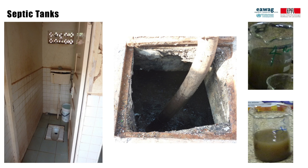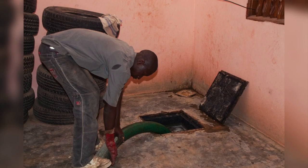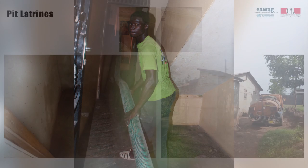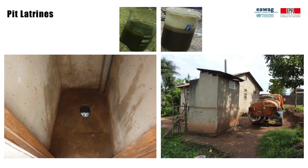Here are some examples of what fecal sludge looks like. This is sludge from septic tanks — you can see where samples were taken and what they looked like in the lab. This also shows how a septic tank located on an internal courtyard is emptied, bringing the hose pipe for the vacuum truck inside. And here is fecal sludge from different types of pit latrines.